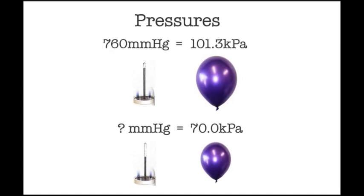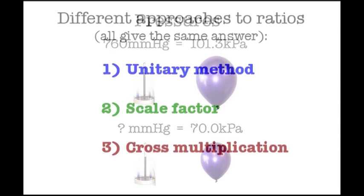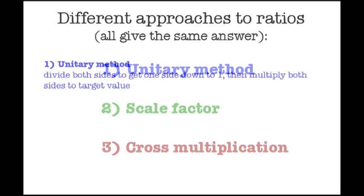So how do we solve these types of problems? I'm going to go over three different approaches - you might even know these already. It's also possible there's something here you've not seen before, so hopefully that might be useful. The approaches I'll cover are the unitary method, the scale factor method, and the cross multiplication method - three different approaches which all give the same results. Firstly, the unitary method.